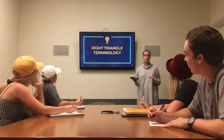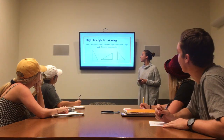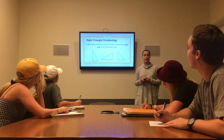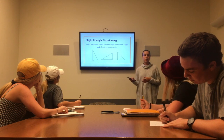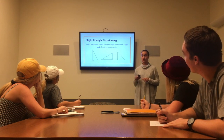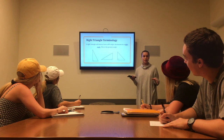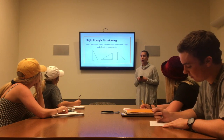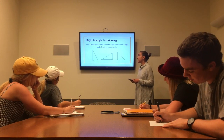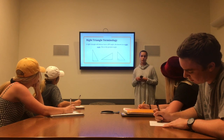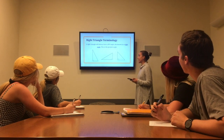First we're going to talk about some right triangle terminology. The first is the right angle. Every single right triangle is always going to have a 90 degree angle, which is called the right angle. We've learned in previous classes that some triangles are classified or characterized by their greatest angle, so a right triangle's greatest angle is its right angle.